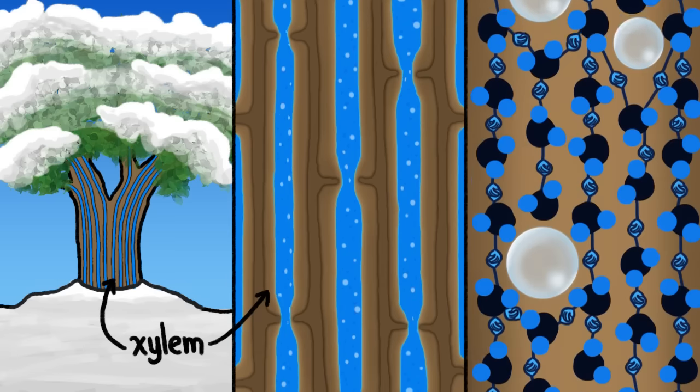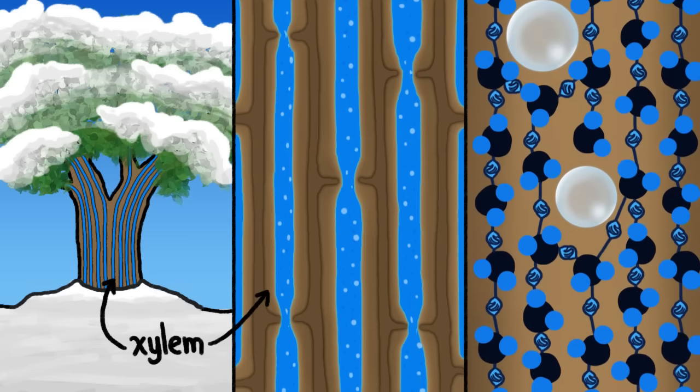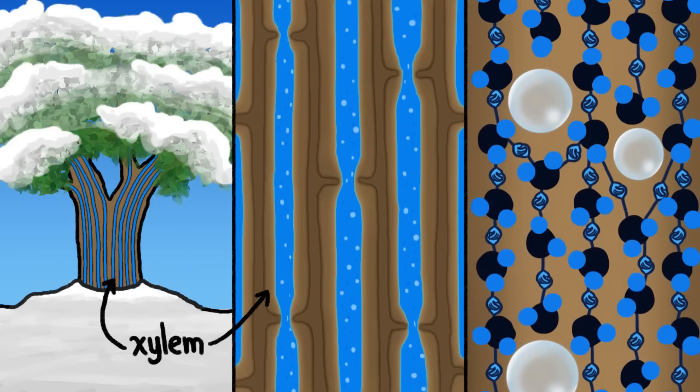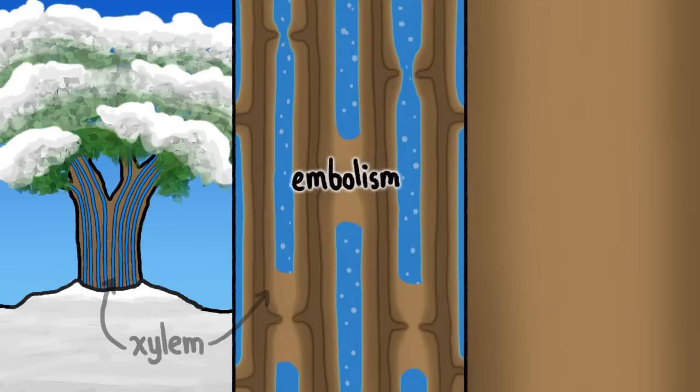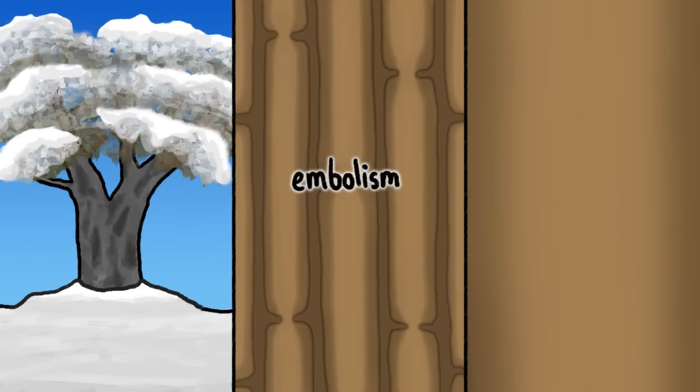This is a problem because the whole plumbing system relies on the intermolecular attraction of water molecules pulling each other upwards against gravity. Air bubbles break the chain of molecules, essentially shutting off the flow of water.